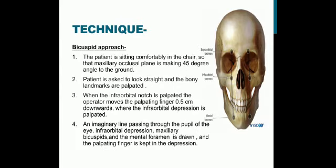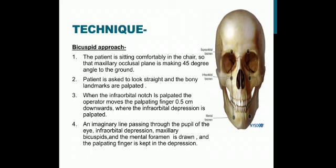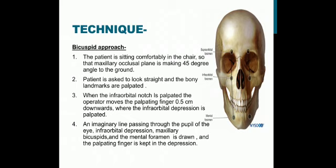In the bicuspid approach, the patient sits comfortably so that the maxillary occlusal plane makes a 45-degree angle to the ground. The patient is asked to look straight ahead and the bony landmarks are palpated. When the infraorbital notch is palpated, the operator moves the palpating finger 0.5 cm downward where the infraorbital depression is palpated. An imaginary line is drawn through the pupil of the eye, infraorbital depression, maxillary bicuspids, and the mental foramen, and the palpating finger is kept in the depression.